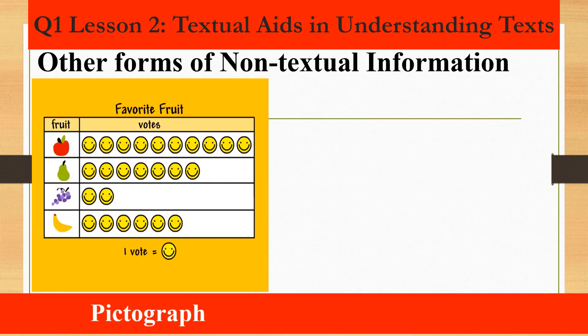Then we have the pictograph. A pictograph is a way of showing data using images, where each image stands for a certain number of things. In the example pictograph, apple got 10 votes as compared with avocado, grapes, and banana. The smiley face represents the number of votes per fruit.